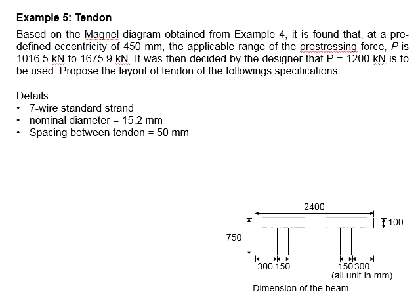Let us try an example to determine the layout of tendons in the prestressed concrete beam. Based on the Magnel diagram obtained in Example 4, it is found that at the predefined eccentricity of 450 mm, the applicable range of the prestressing force P is between 1016.5 and 1675.9 kN.